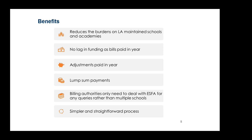The main aim of the change is to reduce burdens on local authority maintained schools and academies. Schools no longer have to pay rates bills, and academies no longer have to spend time claiming that money back from the ESFA. This reduces administrative burdens, simplifies the existing process, and removes the unnecessary circular flow of business rates funding. There's no lagging funding as bills and adjustments are paid in year, meaning schools no longer need to absorb in-year adjustments. Payments are made as a lump sum to billing authorities, and all payment queries are handled by the ESFA directly.